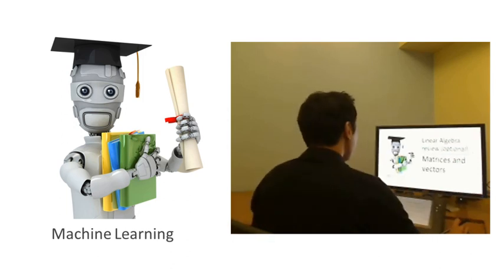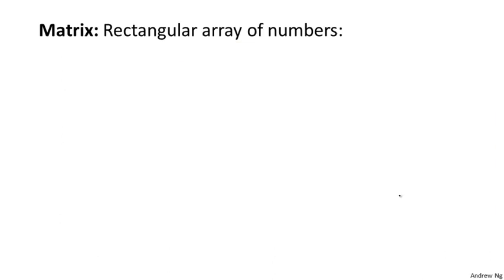A matrix is a rectangular array of numbers written between square brackets. So for example, here is a matrix.